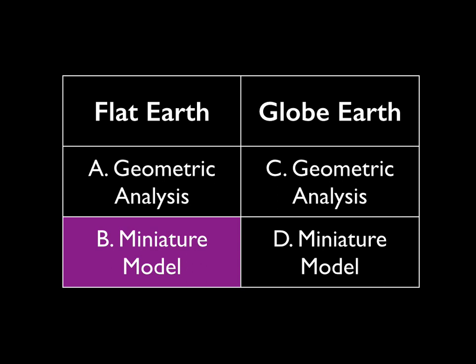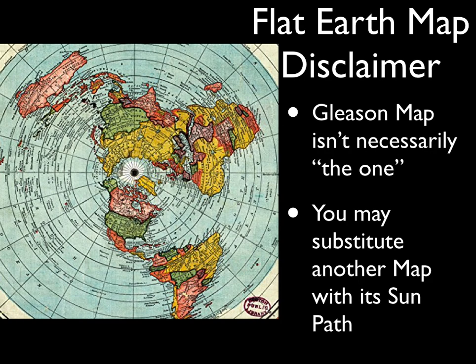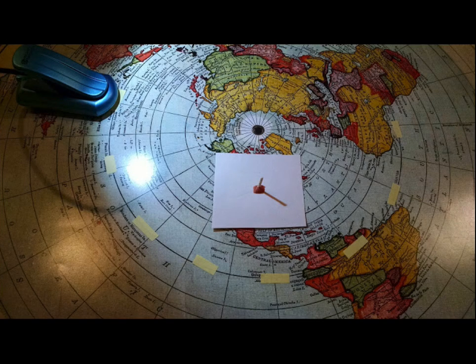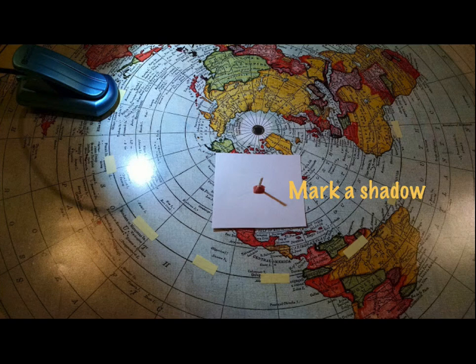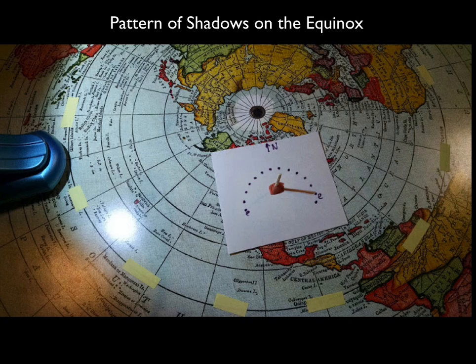Now let's take a look at a miniature model and see if our geometric prediction stacks up. I'm going to use a Gleason's map — disclaimer: it's the most popular flat Earth map but not necessarily the only one; you're free to substitute any other map as long as you know the path of the Sun on the equinox. I've placed a card on top of North America with a little toothpick and clay, marked out the equator, and used a desk lamp — actually a little book light — having the bulb perfectly trace the circle of the equator. I mark a shadow, move the light, and mark again. It turns out I get a perfect semicircle of shadow marks, just as we predicted.